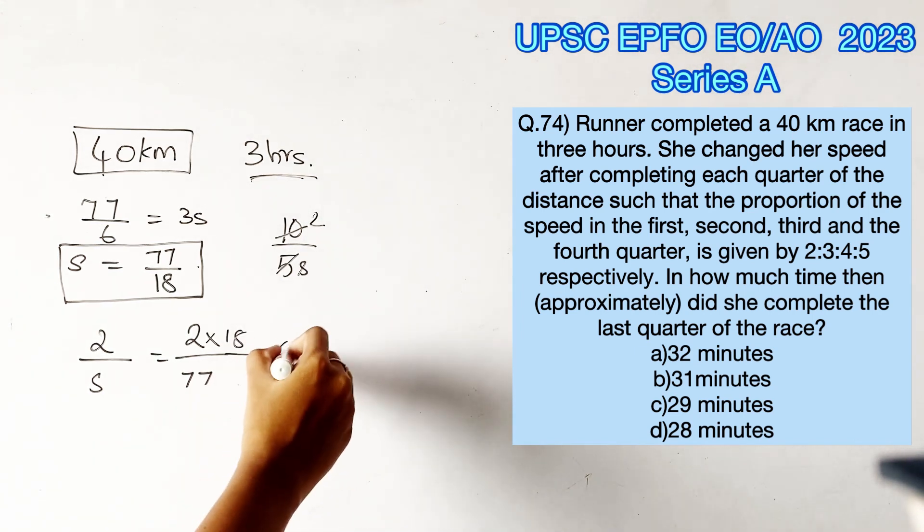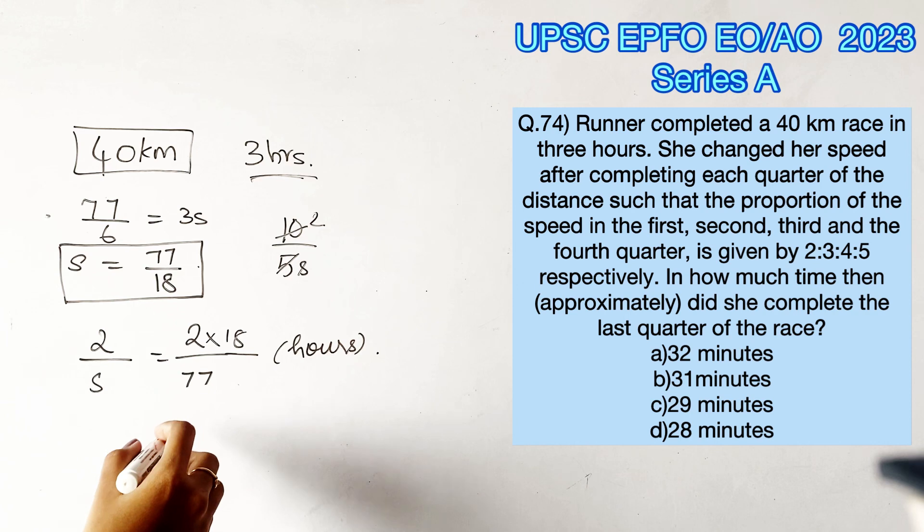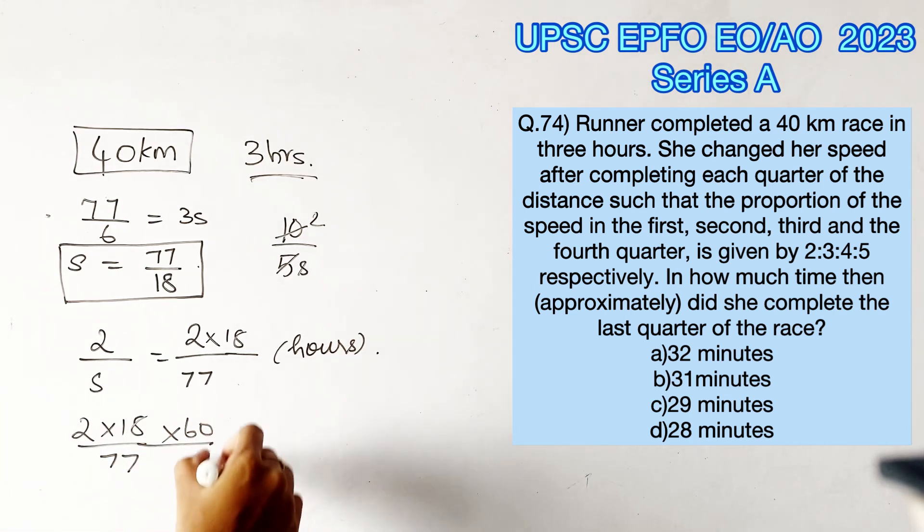Now this answer would be in terms of hours because we were dealing with kilometers and hours from the beginning. To change it into minutes, we will have to multiply 60. Now if you notice the options, they range from 28 to 32.